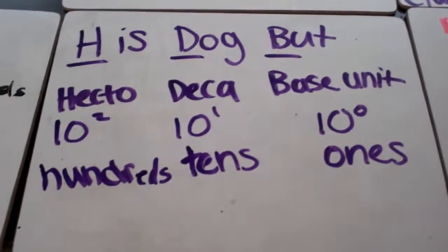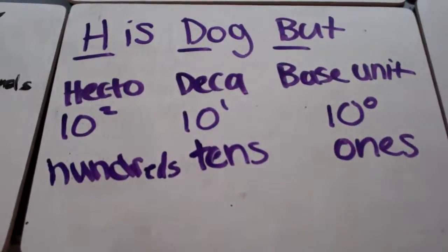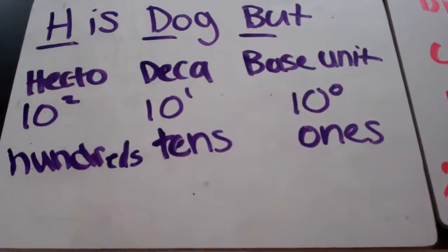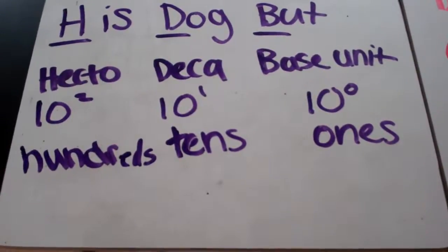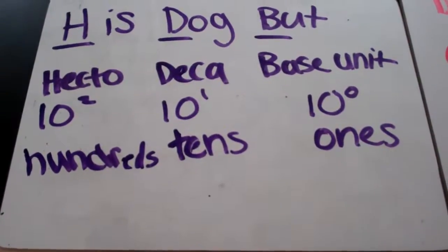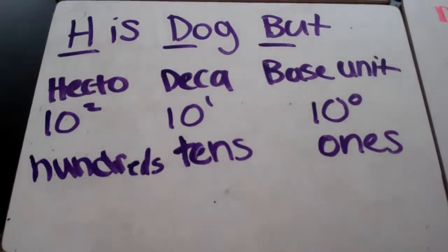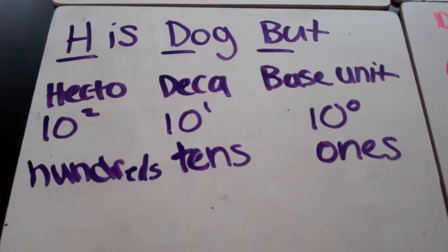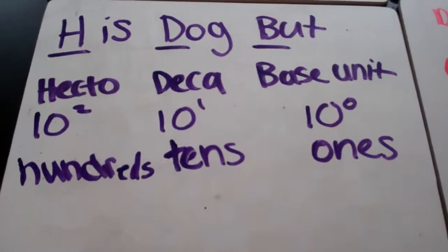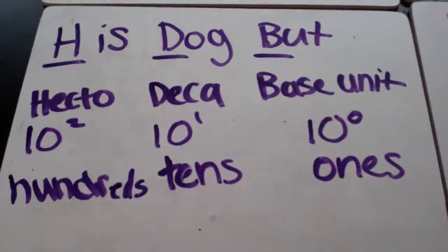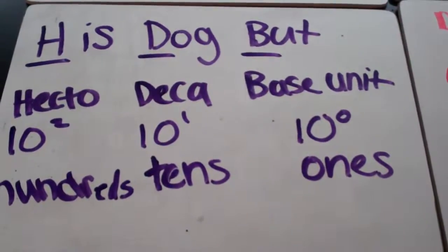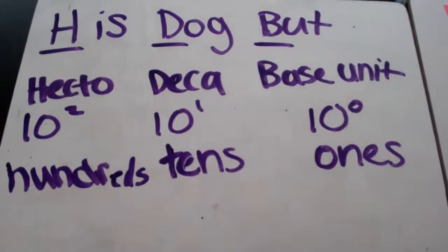The next part is 'His Dog Butt.' The H in 'his' stands for Hecto, written in scientific notation as 10 to the 2nd power, which means the 100s place. The D for 'dog' stands for Deca, written as 10 to the 1st power, meaning the 10s place. And the B in 'butt' stands for Base Unit, written as 10 to the 0 power, which is just the 1s place.